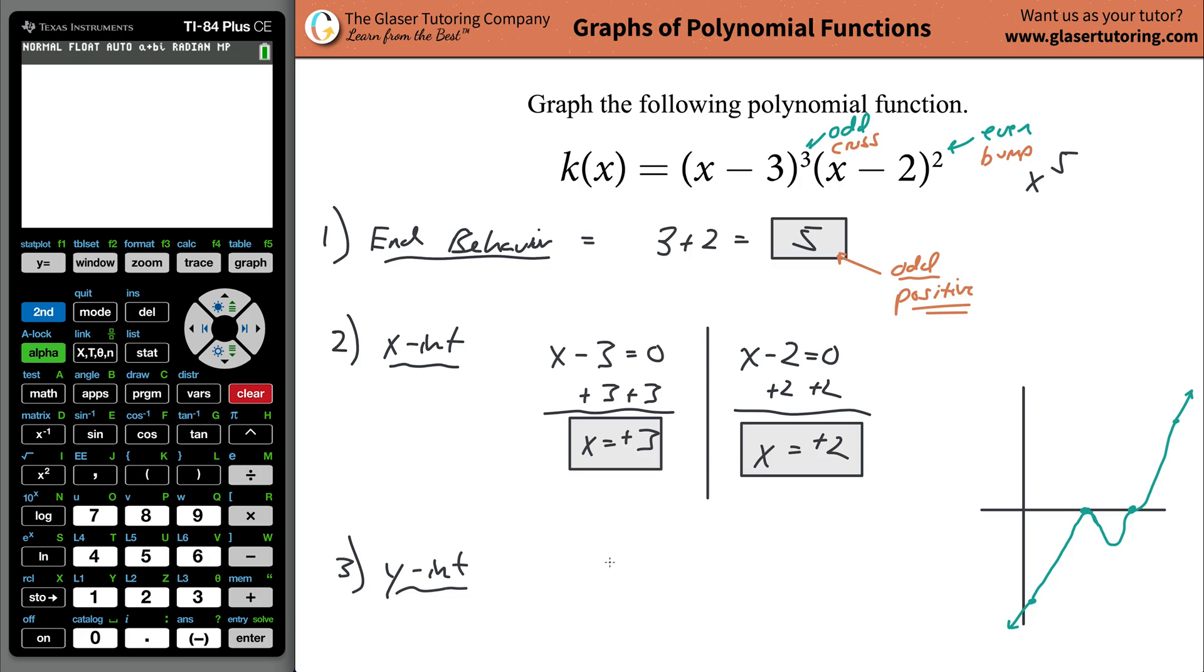Okay, enough of the sermon. So finding the y-intercept, what do we have to do? We simply rewrite the function. So k of x equals (x - 3)³ multiplied by (x - 2)². You don't have to use this - you can just plug in y there because I like y. I don't like h of x or k of x. In any case, what you need to do now is solve for the y-intercept. And how we do that is by plugging in zero for x, because we know that wherever the function crosses the y-axis, the x value has to be equal to zero. That's just the definition of it.